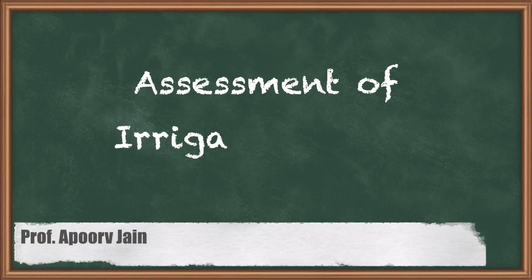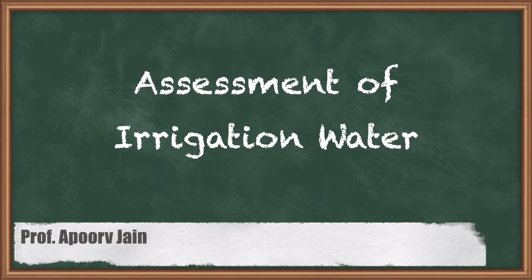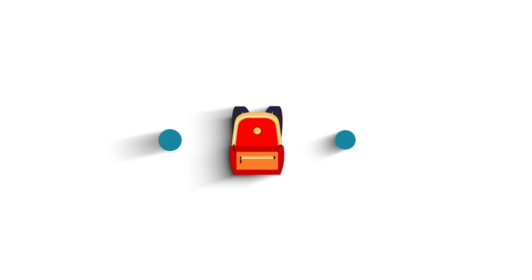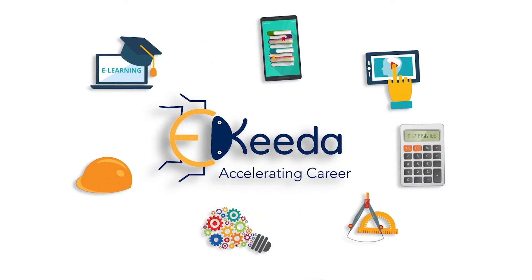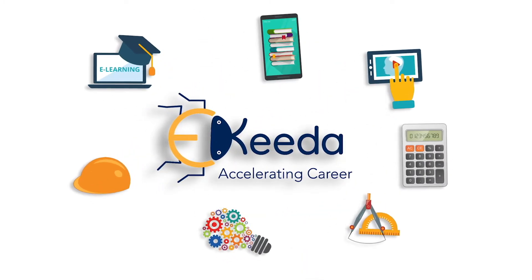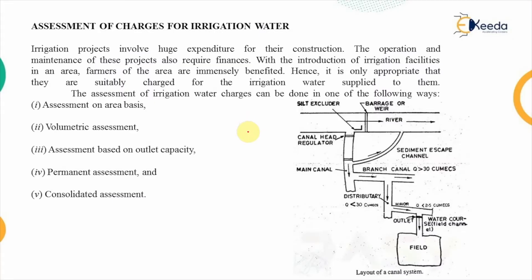Hello everyone. In this video we are going to look at the assessment of the irrigation water — how it is being carried out. Irrigation facility, or the irrigation water that is provided, is an artificial method of application of water to the crops.